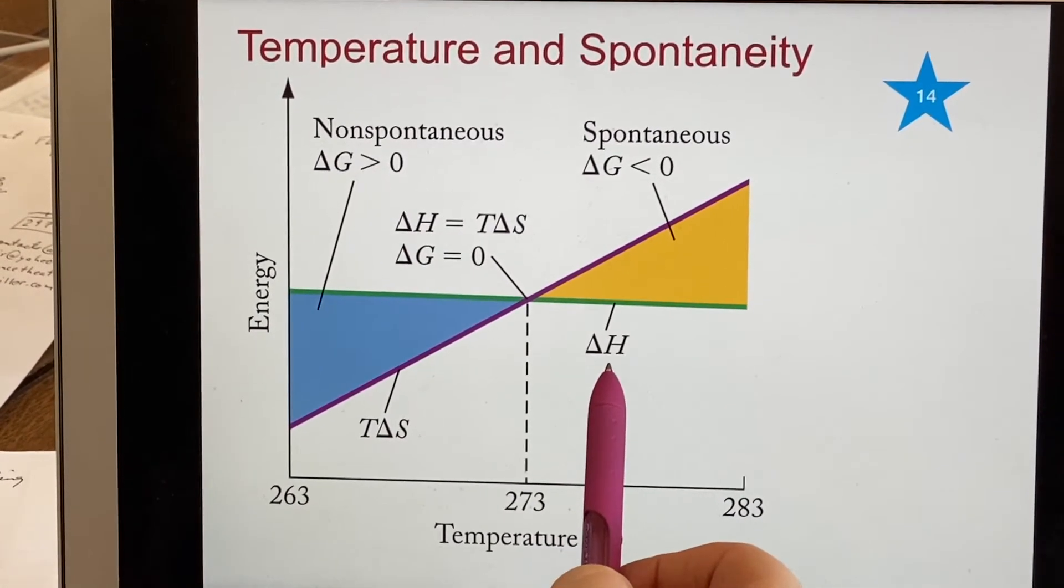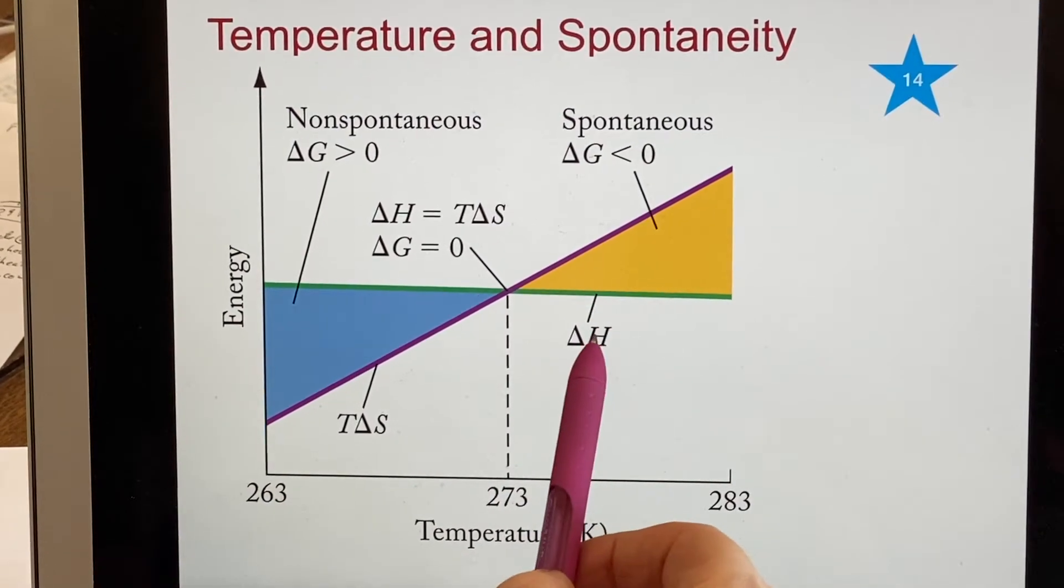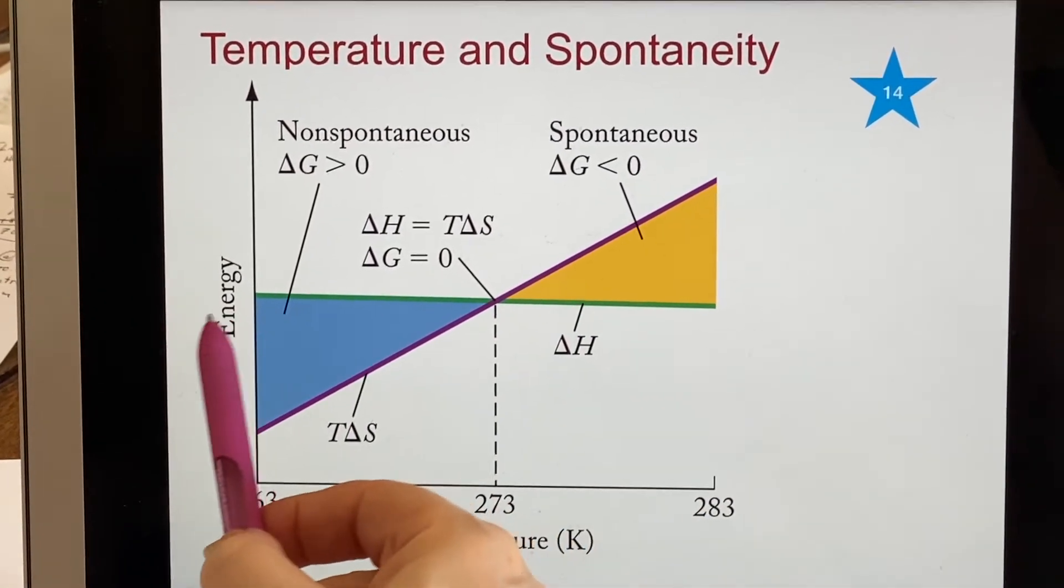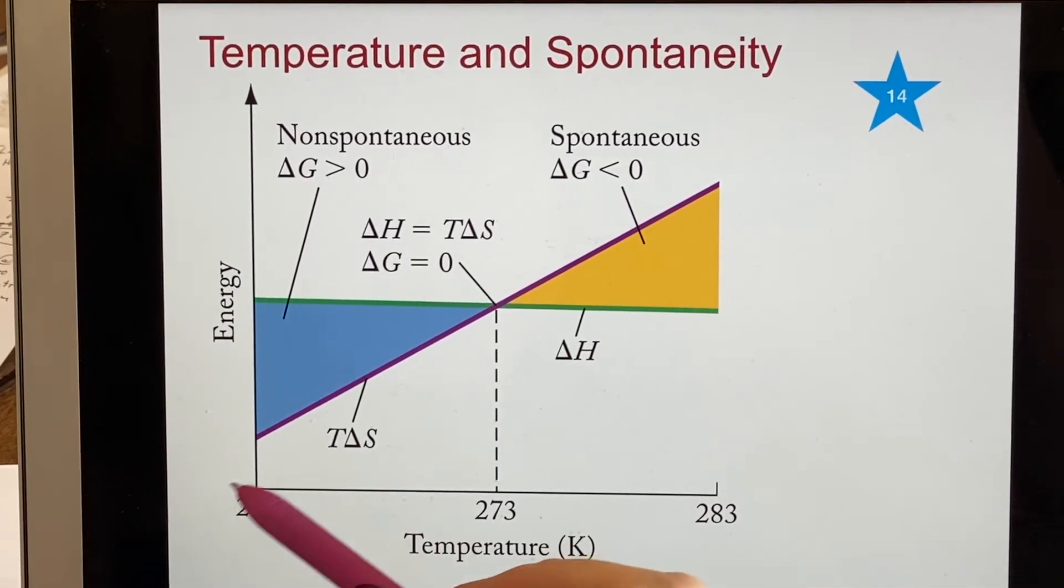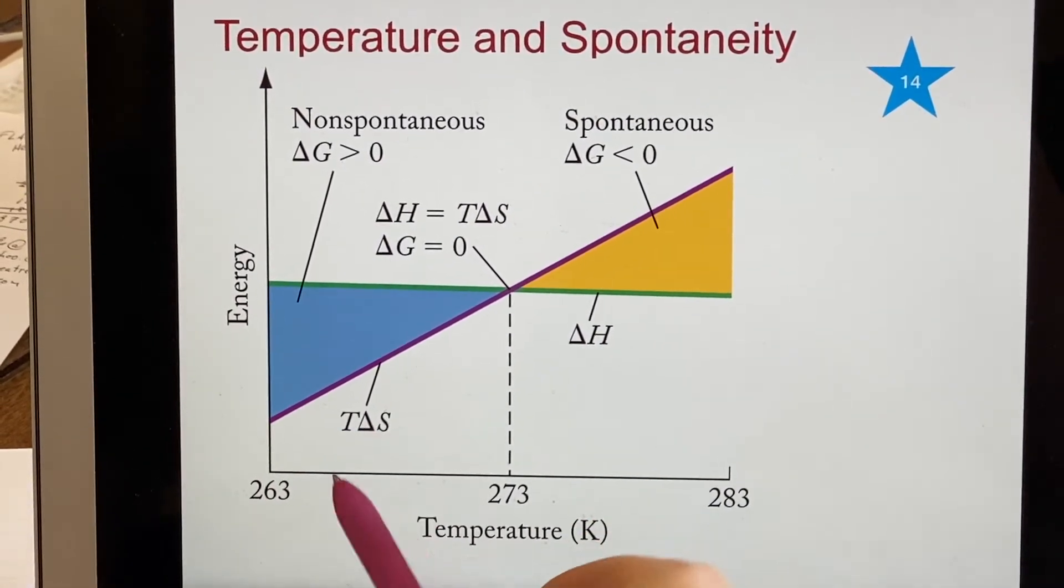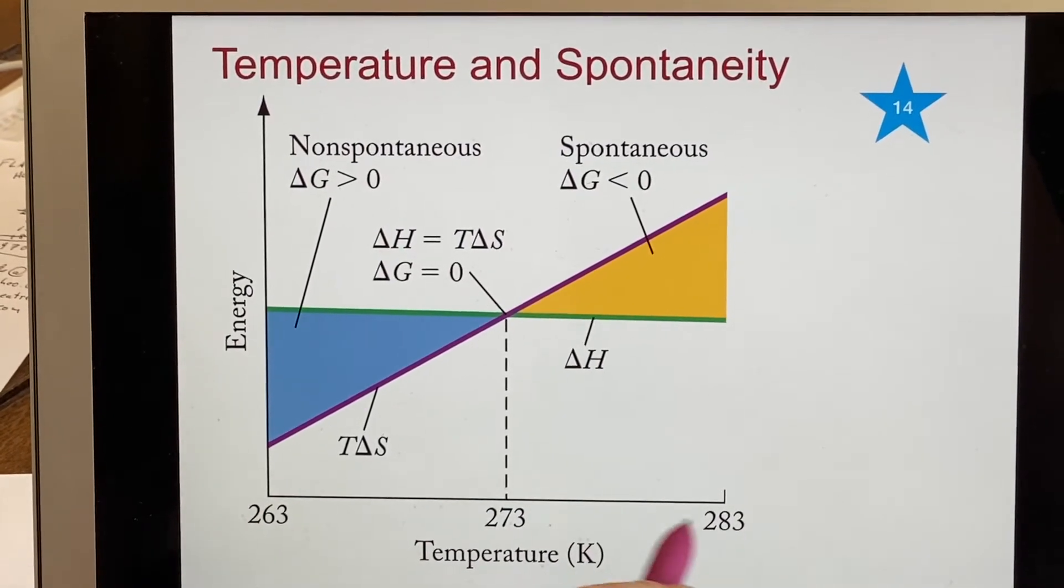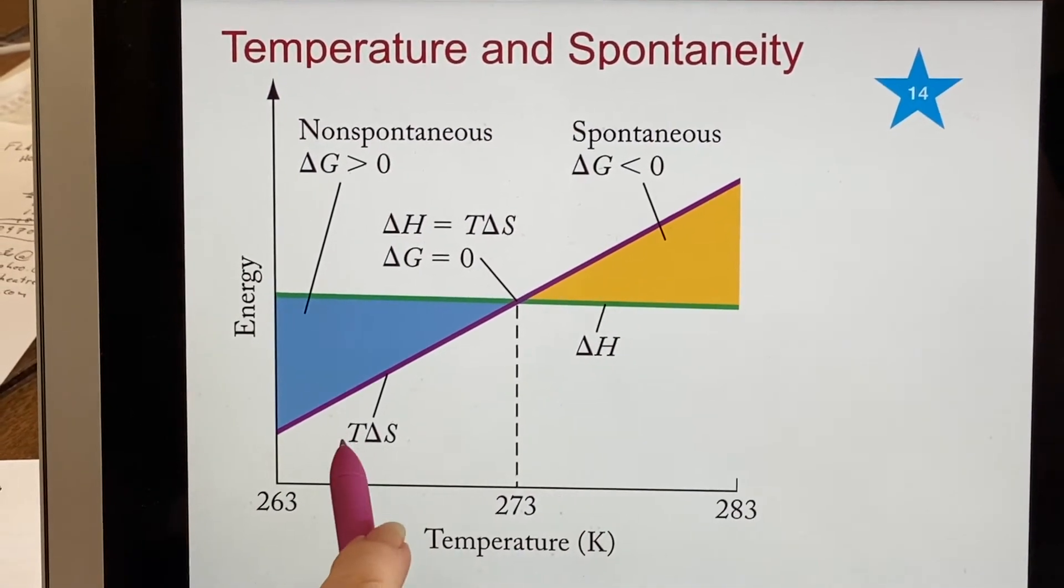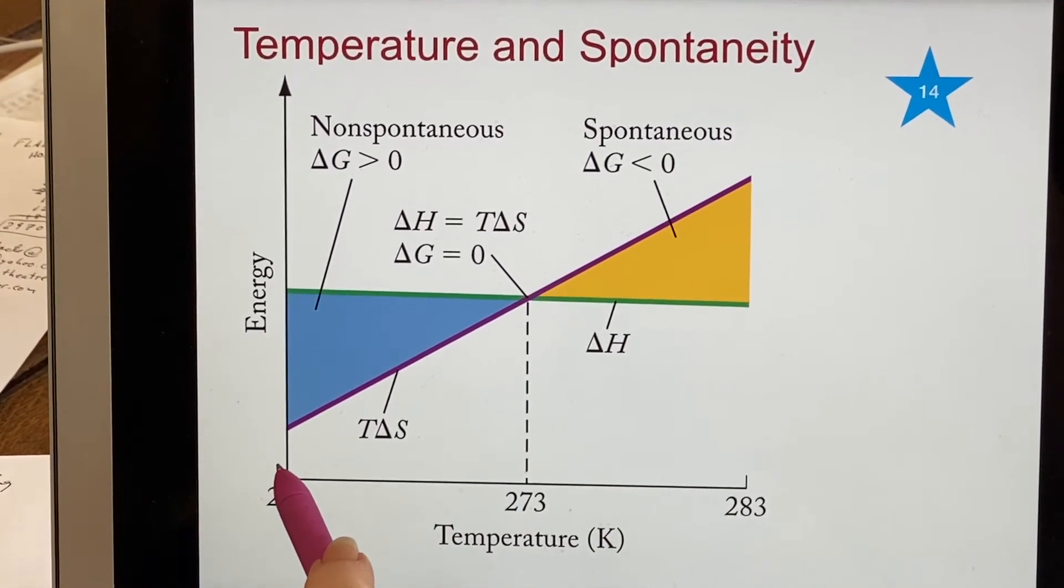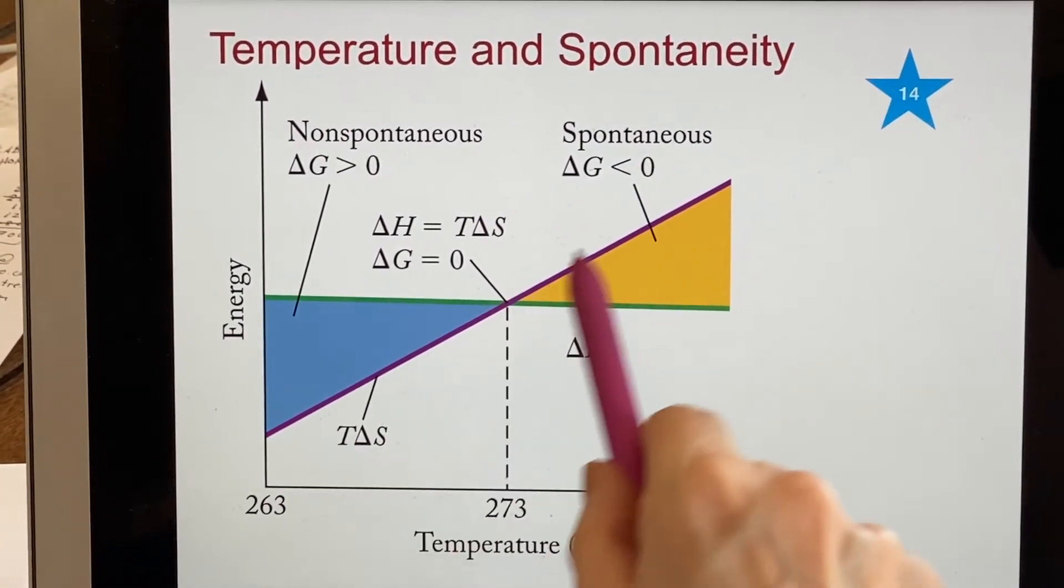And this is not strictly true. But as long as you're close to this temperature delta H could be considered a constant. And so they've just drawn it as delta H is a constant. And then what they've drawn here is something that has a slope. It's T delta S. So T is the x value and it is the variable. And the delta S could be considered to be a slope of the line.